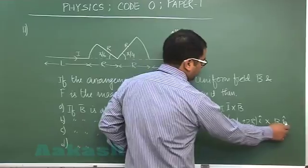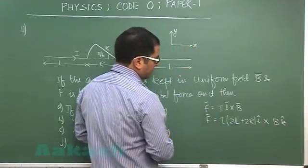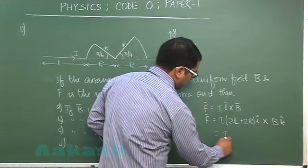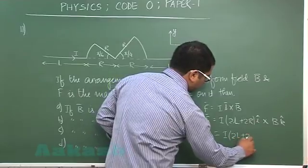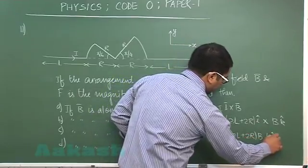And you could say that I cross K would be minus of J, so that's I 2L plus 2R into B into minus of J.